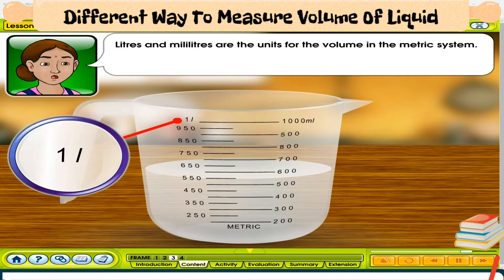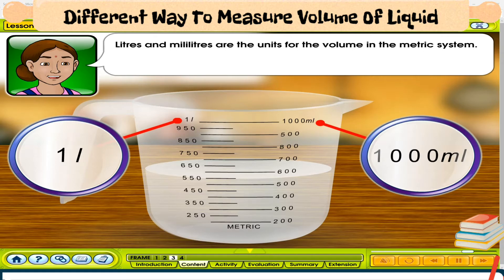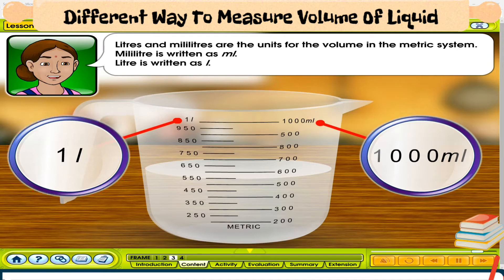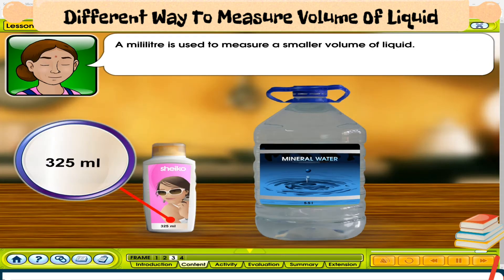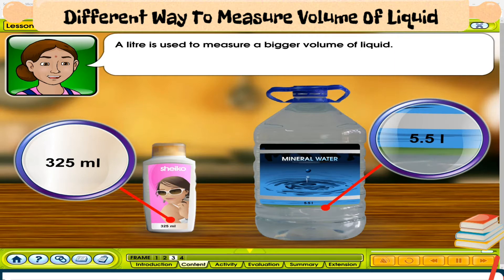Liters and milliliters are units for volume in the metric system. Milliliter is written as mL. Liter is written as L. A milliliter is used to measure a smaller volume of liquid. A liter is used to measure a bigger volume of liquid.